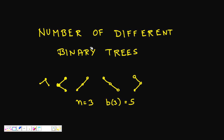In this lecture we are going to learn about one very interesting problem: to find the number of different binary trees when you are given that there are n nodes in the binary tree. So you are given an n-node binary tree and you have to find how many different possible structures are there.